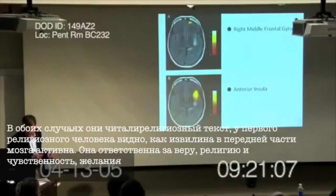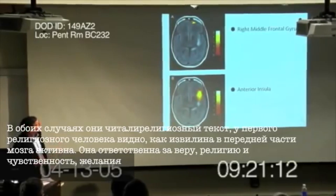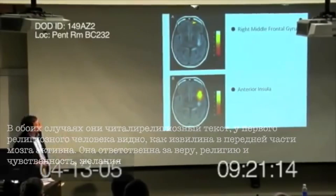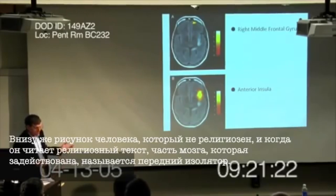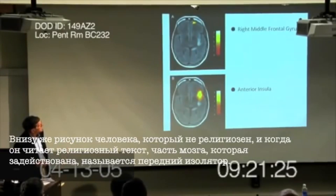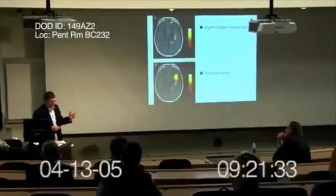The right middle frontal gyrus is a part of the brain associated with theory of mind — it has to do with intents, beliefs, and desires. In contrast, here's an individual who would not particularly self-describe as religious. And when they're read a religious text, what you see is that a part of the brain called the anterior insula lights up. This is a part of the brain that's associated with disgust or displeasure on hearing something.